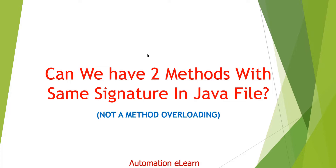Our requirement is to have two methods with the same signature in a single Java file. Let me clarify - we are not talking about method overloading, because in method overloading the method signature must be different. Here we are talking about two methods with the same signature, so it's very clear we are not talking about method overloading.